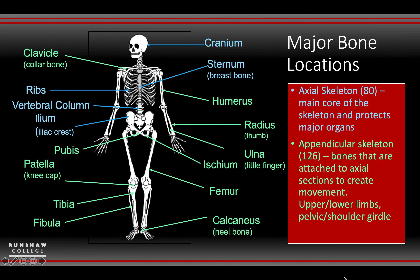The rest in green are appendicular, covering everything from your clavicle (collarbone), humerus, ulna and radius. A memory tip: if you've got your thumbs up, your little finger is underneath — so 'little finger under' is ulna. You've also got your pubis, ischium, and ilium forming the pelvis, your patella (the kneecap), and working down to the heel bone — all making up the front part of the skeleton.